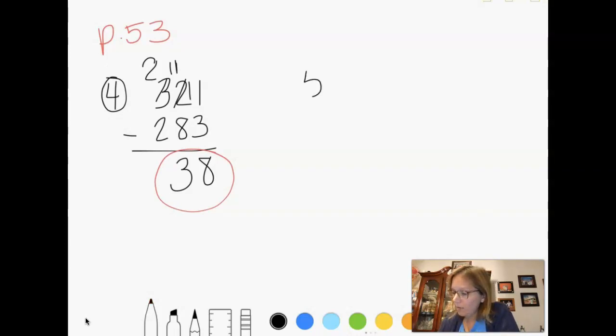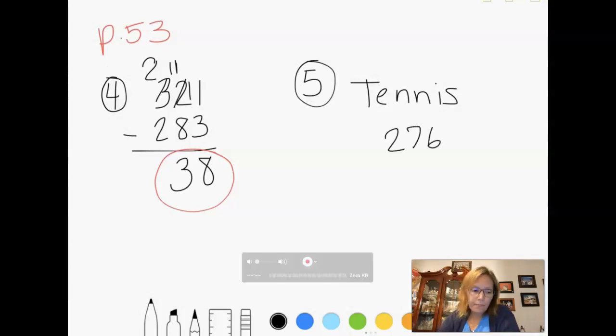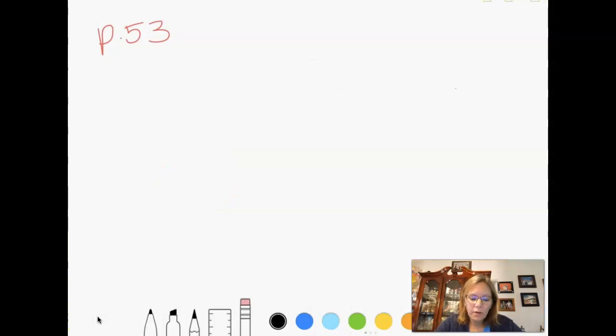And number five says, what sport is offered at the fewest schools? So fewest means least. So I'm going to look for the smallest number and try to see which school that is. And I see that tennis, and since this is a bar graph, it's easy to see that tennis is the lowest at 276. So for numbers six through nine, and I am still on page 53, please have your book with you. If you don't, go get it because you need to see this information in order to follow along with what I'm doing.